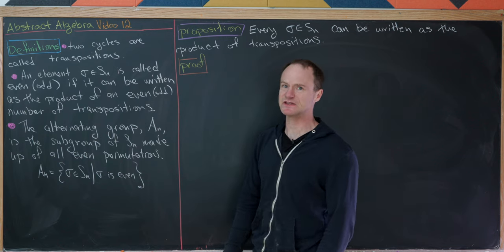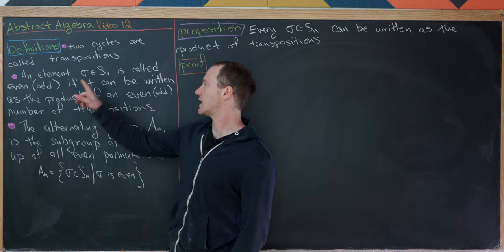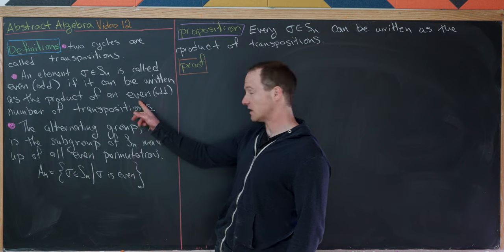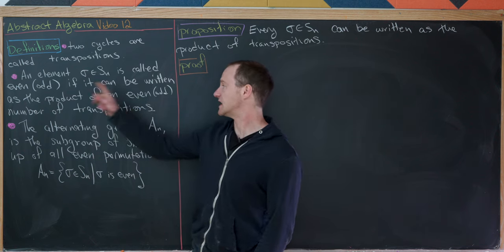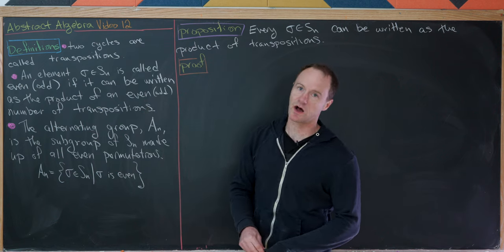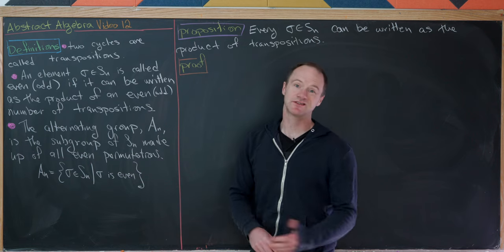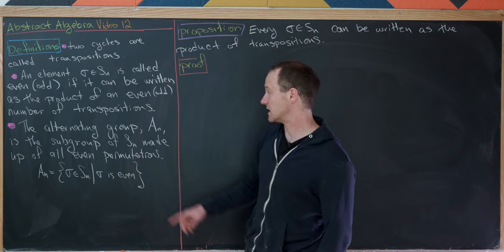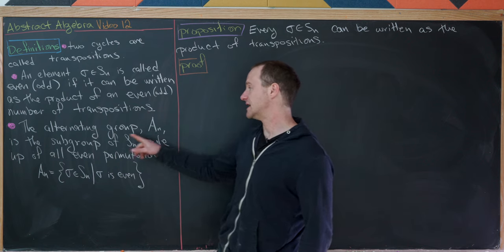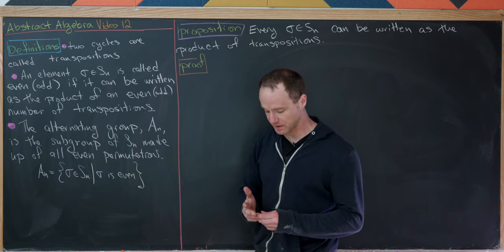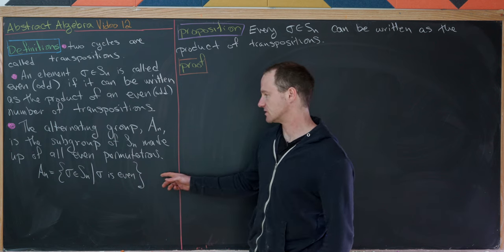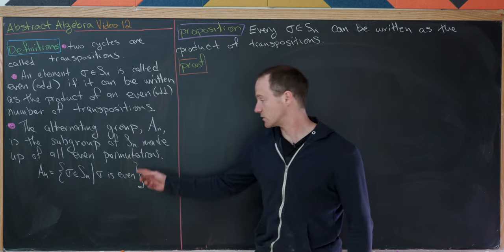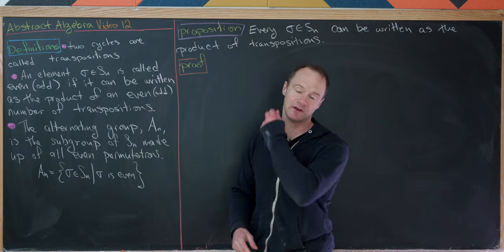Our next definition concerns evenness and oddness of permutations. An element sigma of Sn is called even or odd if it can be written as the product of an even or odd number of transpositions. A priori this may not be a well-defined property, but we will prove that it is. Finally, the alternating group An is the subgroup of Sn made up of all even permutations — that is, An equals all sigma in Sn where sigma is an even permutation, meaning sigma can be written as the product of an even number of transpositions.